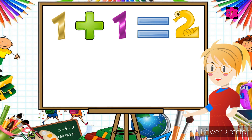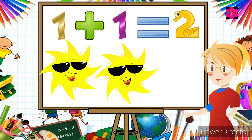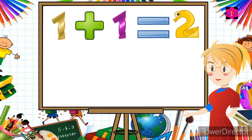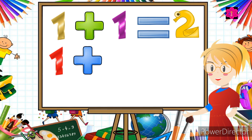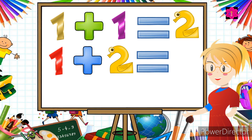Let's count — there is one sun, now we add one more sun. Count how many suns. Yes, two! So one plus one is equal to two. Okay, now another question: one plus two is equal to...?